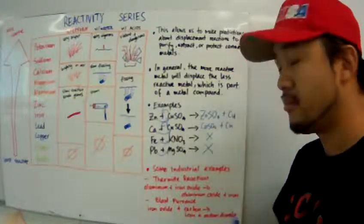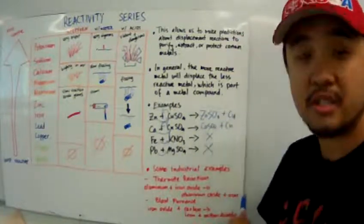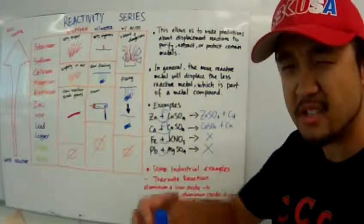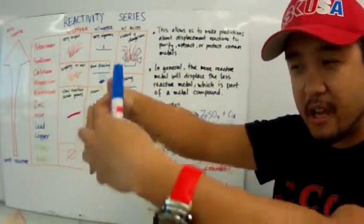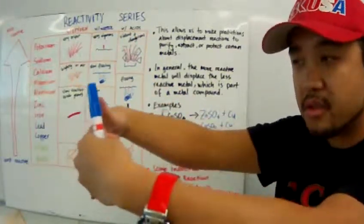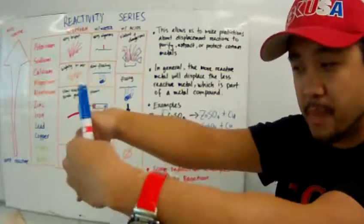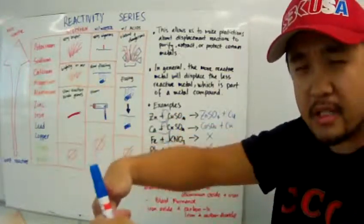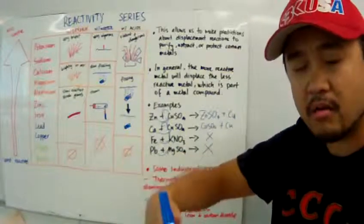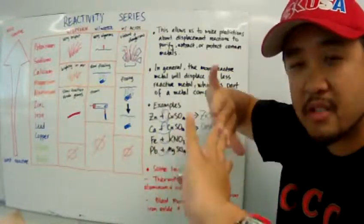they form aluminum oxide and molten iron. The molten iron is really hot. It is like liquid. And iron workers, or railroad workers, will pour the molten iron onto the railroad track to link two pieces of railroad together.